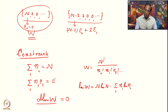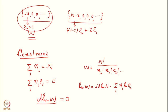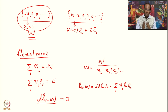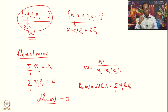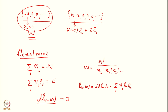Therefore, instead of working on W, we will work on log W and set d(log W) = 0. Remember: the weight of a configuration is W = N! / (n0! n1! n2! ...), and from this we arrived at log W = N log N − Σi ni log ni. Our aim is to set the derivative of this equal to zero. Keep in mind that n1 does not depend upon n0, n2 does not depend upon n0 — they are all independent of each other, and this feature will be incorporated in the discussion in the next lecture.